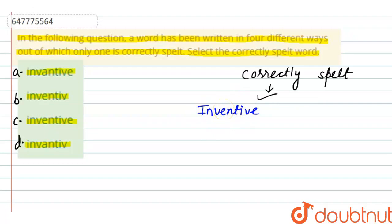Inventive का मतलब होता है कुछ चीज invent करना, यानि कि कुछ चीज को खोजना. So, हम देख सकते हैं कि यहाँ जो सारी Spelling है वो किस से match कर रही है? वो हमारी Third Option से match कर रही है, that is I-N-V-E-N-T-I-V-E.